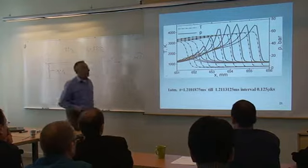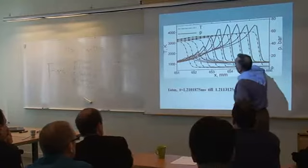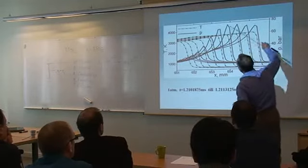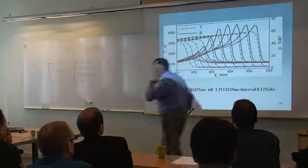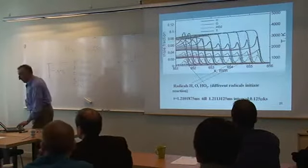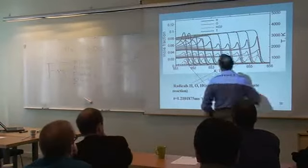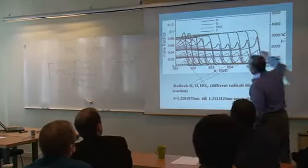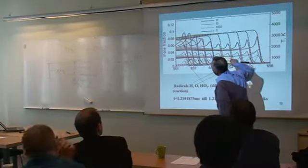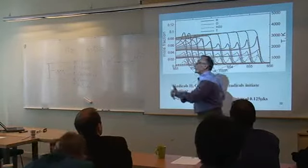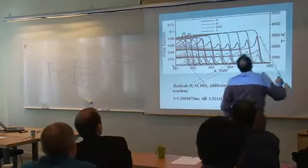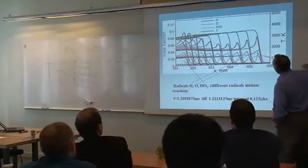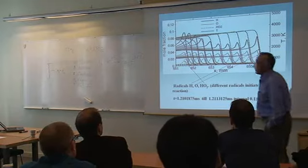After the previous stage, transition to detonation occurs. You can see how transition happens: there is still a flame, then after exponential growth it becomes overdriven detonation, and then the detonation wave propagates. In the detonation regime, reaction starts after the leading shock raises the temperature — only behind the leading shock do reactions begin.